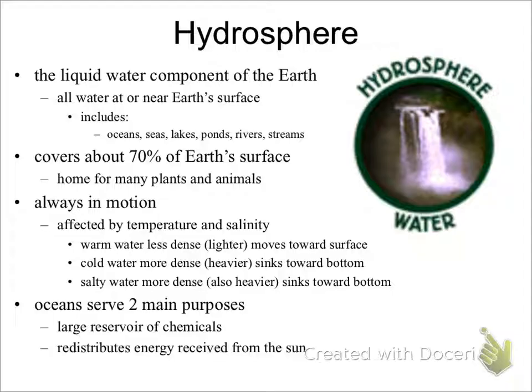Warm water is less dense and lighter; therefore, it moves toward the surface. Cold water is more dense and heavier; therefore, it sinks toward the bottom. Salty water is also more dense and sinks toward the bottom. The oceans of the hydrosphere serve two main purposes: as large reservoirs for chemicals and to redistribute energy received from the sun.